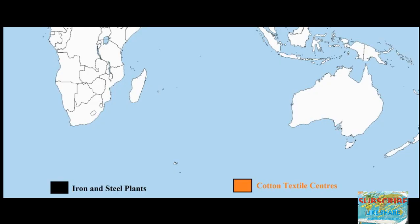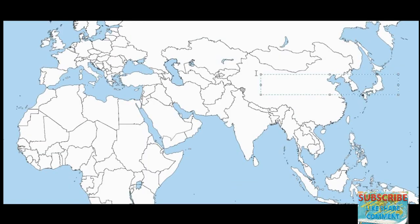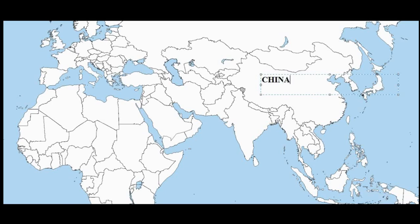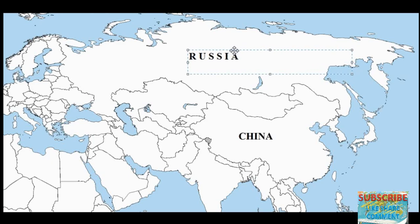This map covers manufacturing industries — iron and steel plants and cotton textile centers of the world. Iron and steel plants are marked in black color, and cotton textile centers are in orange color. Let's start with iron and steel plants.